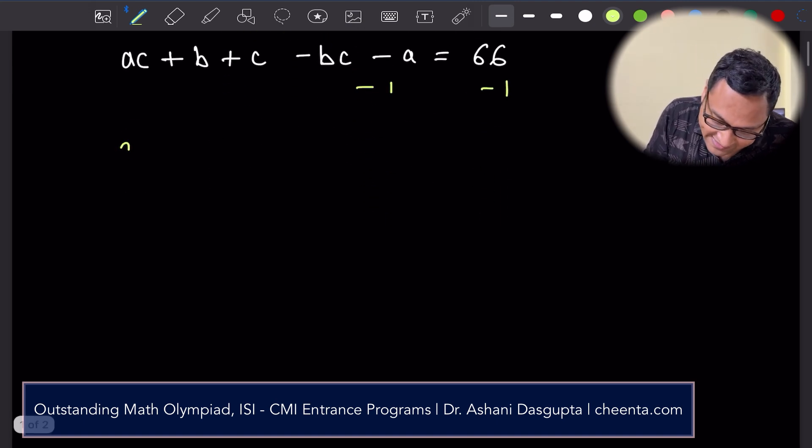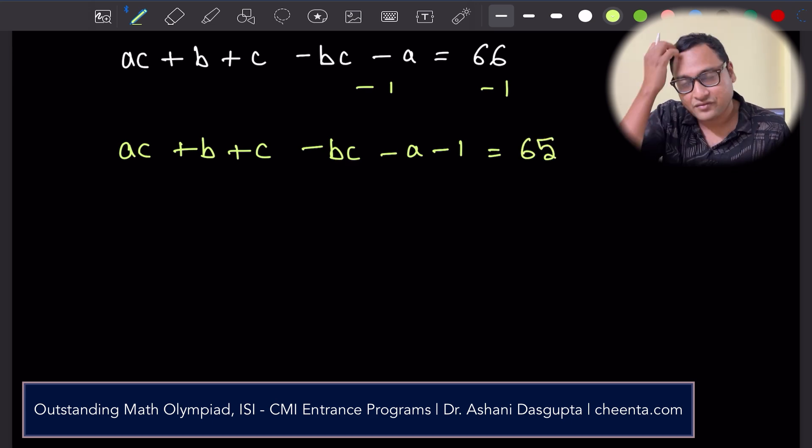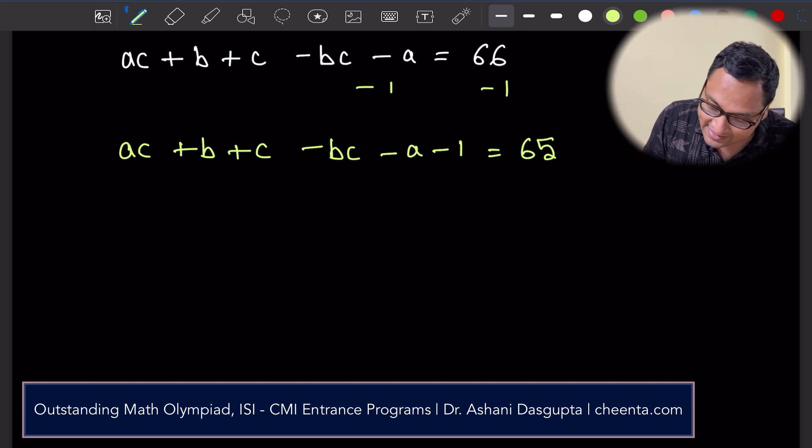I'll subtract one from both sides, so I'll have ac + b + c minus bc minus a minus one is equal to 65.